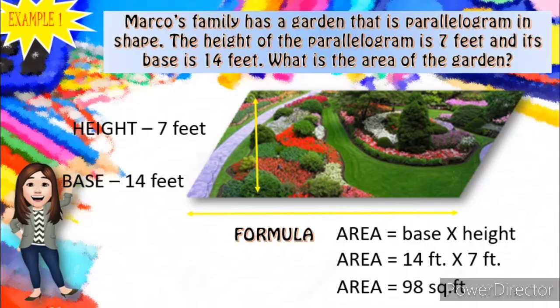In the International System of Units, or SI, the standard unit of area is the square unit. Since we used feet, therefore the answer is 98 square feet. So, what is asked in the problem? What is the area of the garden? Therefore, the area of the garden is 98 square feet.